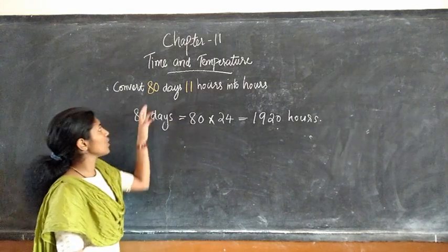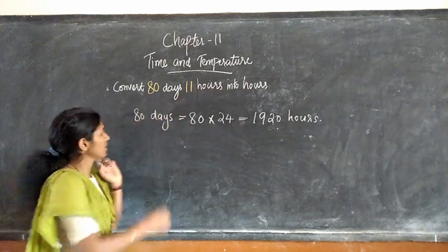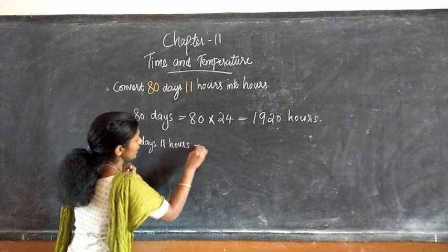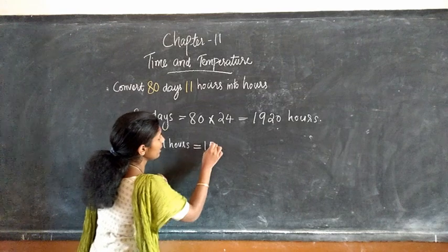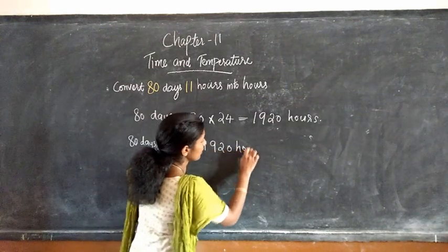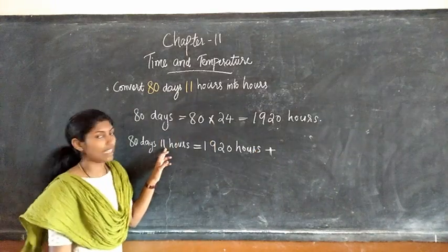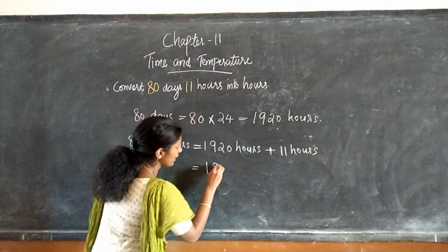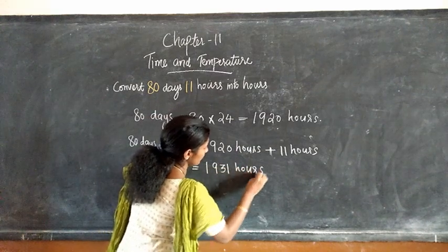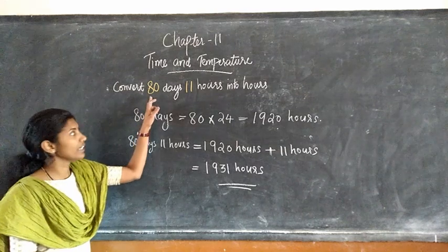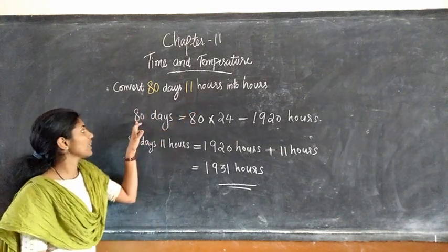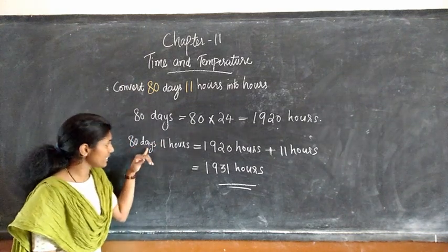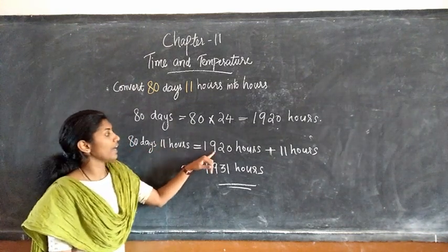Next question: convert 80 days 11 hours into hours. First, we have to convert 80 days. 80 days equal to 80 into 24, that is equal to — sorry — 1920 hours. We have to convert 80 days 11 hours, so 80 days 11 hours equal to 1920 hours plus 11 hours. When we add these numbers, we will get 1931 hours.